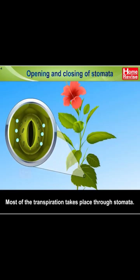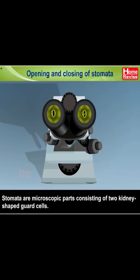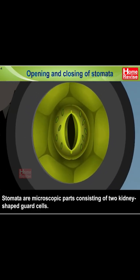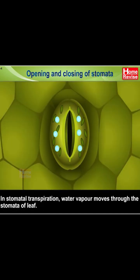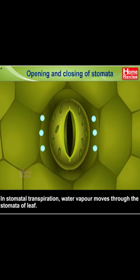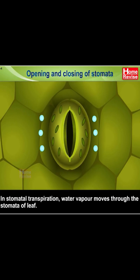Most of the transpiration takes place through stomata. Stomata are microscopic parts consisting of two kidney-shaped guard cells. In stomatal transpiration, water vapor moves through the stomata of leaf.